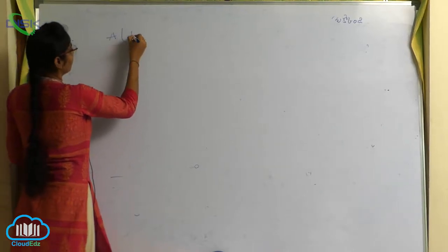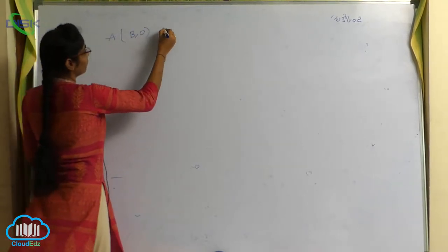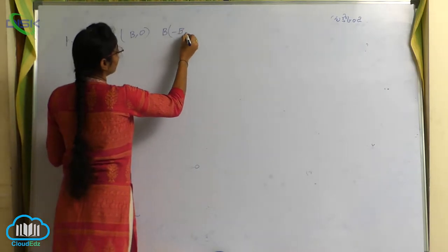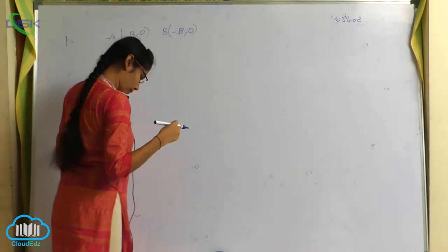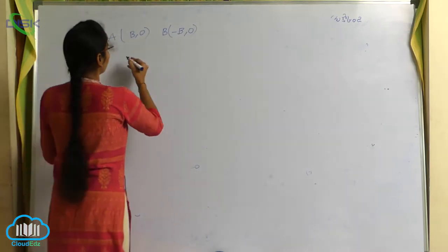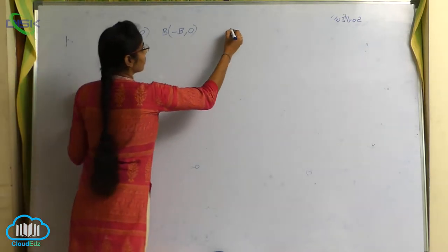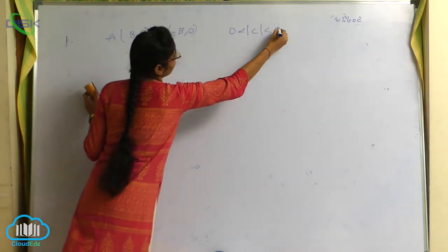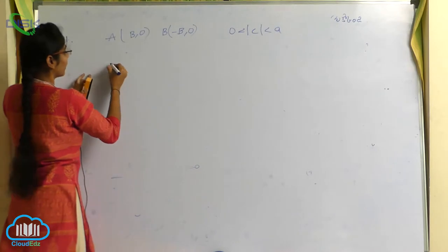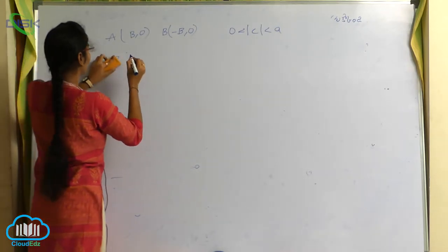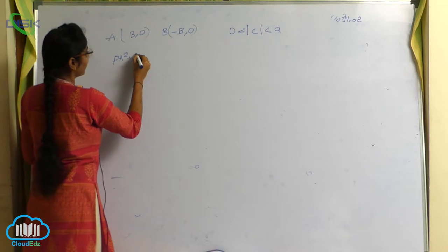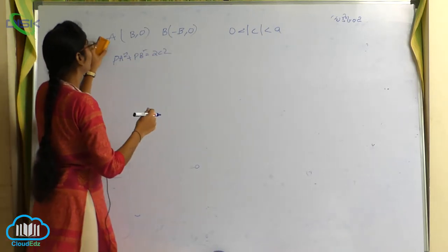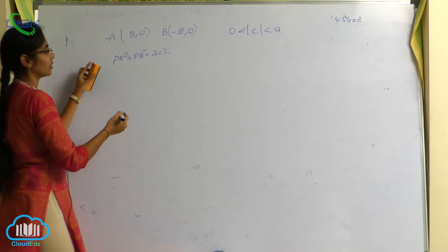Consider points b and minus b on the x-axis, with condition 0 less than c less than a. The given equation to prove is: p a square plus p b square is equals to 2 c square. We will use this equation to find the locus of point p.